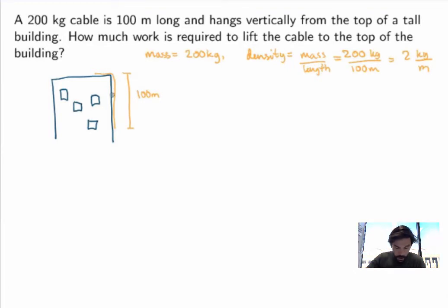The problem is the following. So each little part of the cable will be lifted a different distance, right? So I'm lifting the whole cable to the top of the building. That means that the top part of the cable is not actually moving at all, it's not going to be lifted at all, while the middle of the cable will be lifted 50m, and the bottom of the cable will be lifted the whole 100m.